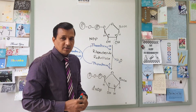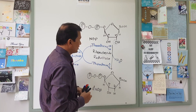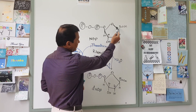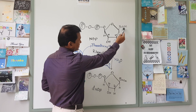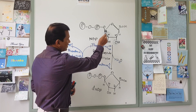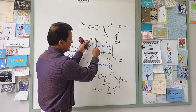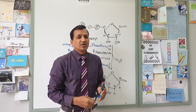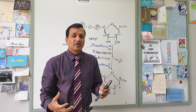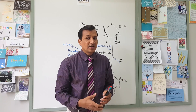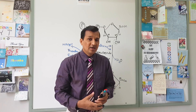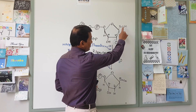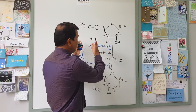Here is the reaction for ribonucleotide reductase. We have a nucleotide diphosphate — there is a ribose molecule, the base is attached to the first carbon, and two phosphates are attached to the fifth carbon of ribose. This is a nucleotide diphosphate — NDP is a general name. It can be adenine diphosphate (ADP), cytidine diphosphate (CDP), guanidine diphosphate (GDP), or uridine diphosphate (UDP).